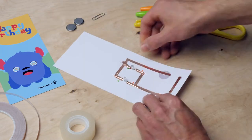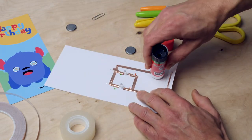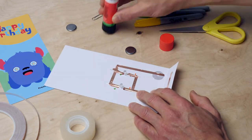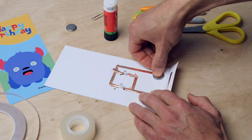This time you adhere the battery with a little glue. Make sure that the battery makes contact with the copper tape. So don't use too much glue. A small drop suffices.